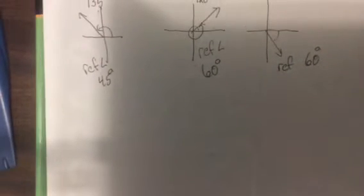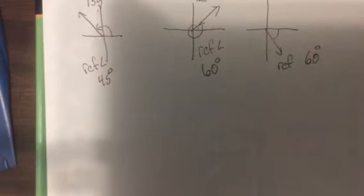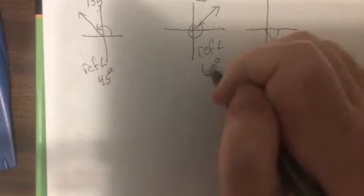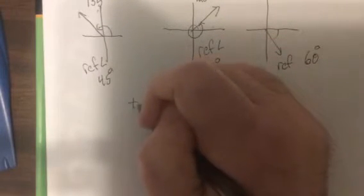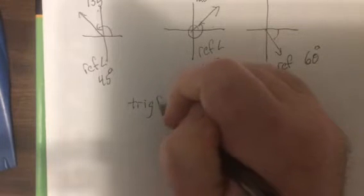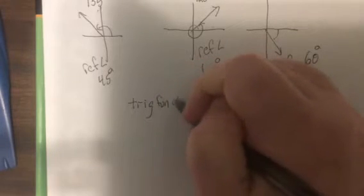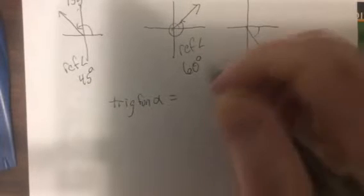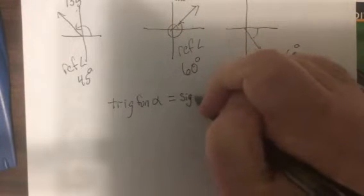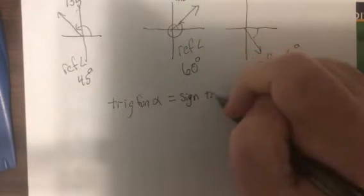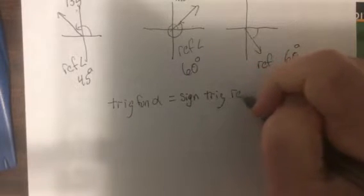Now what they discovered throughout history is that you can switch a trig function of an angle to equal the sine of the trig function times the reference angle.